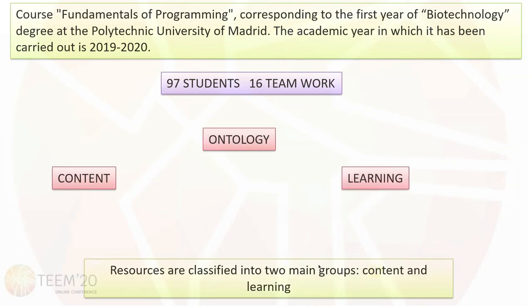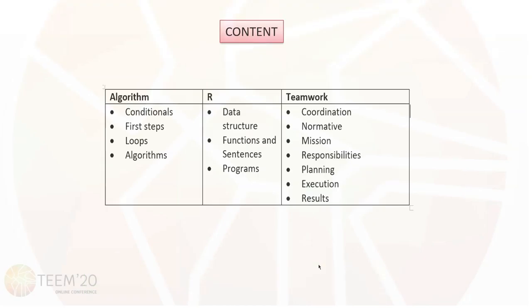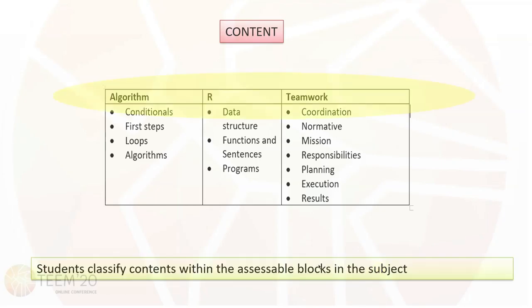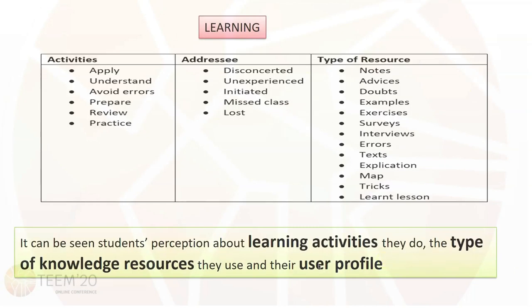The students have defined two main groups: content and learning. The content group has been divided into the most important specific and general targets. The first row shows how students have clustered the class content. This corresponds to the different scoring blocks of the subject: algorithm, art and teamwork. The second row identifies the classification for each block.